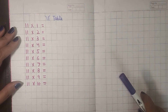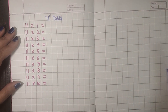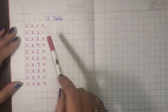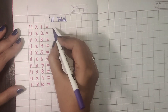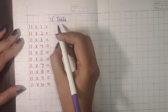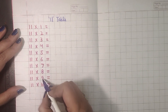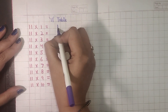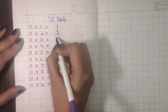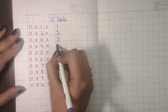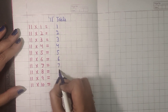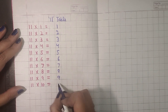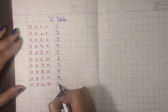For the table of 11, for the ones position and the tens position, what we will do is: 11 times 1, I'll write 1; 11 times 2, I'll write 2; 11 times 3, I'll write 3; 11 times 4, I'll write 4; 11 times 5, I'll write 5; then 6, 7, 8, 9, and for 10 I'll write a 0 here.